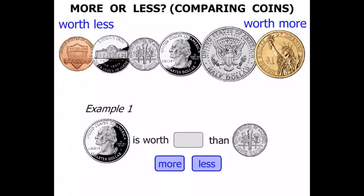A quarter is worth 25 cents. A dime is worth 10 cents. So a quarter is worth more than a dime.